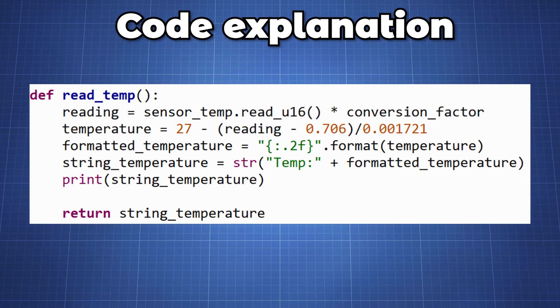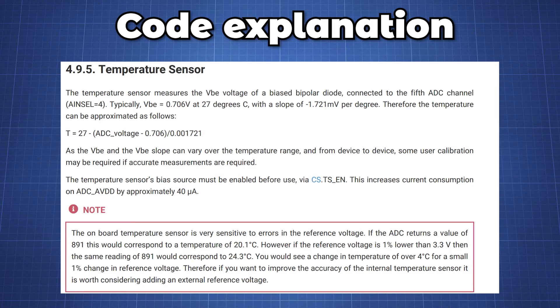In the readTemp function we create a variable reading which will give you an integer number between 0 to 65535 so we have to convert this value to celsius degree scale. So we set reading equal to that values being read and times that with the conversion factor. The temperature sensor works by delivering a voltage to the ADC4 pin that is proportional to the temperature. From the datasheet a temperature of 27 degrees celsius delivers a voltage of 0.706 volt. With each additional degree the voltage reduced by 1.721 millivolt.